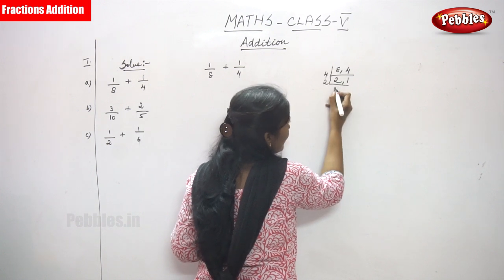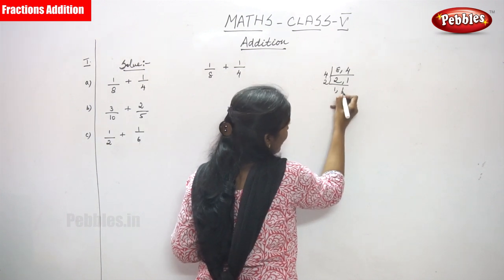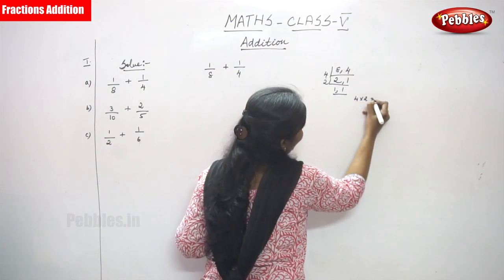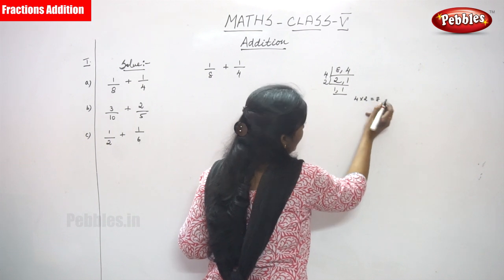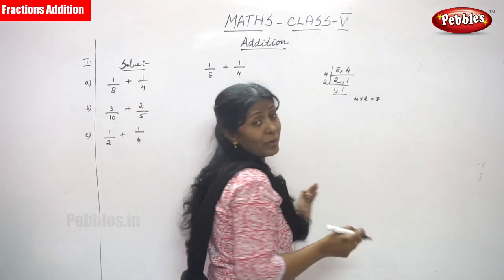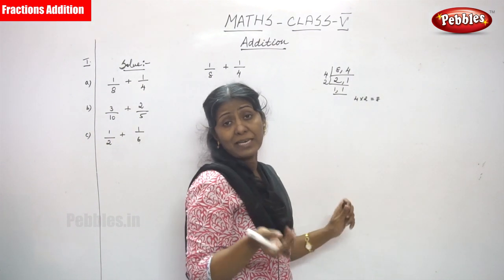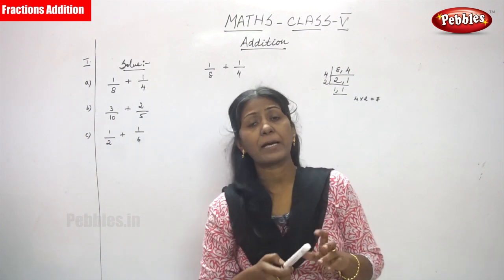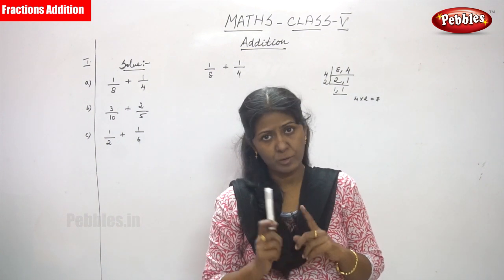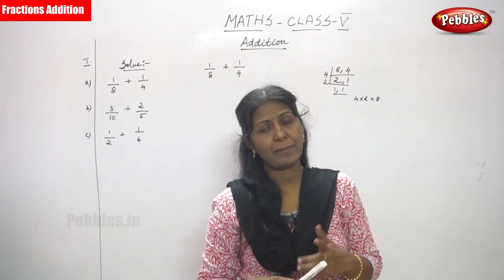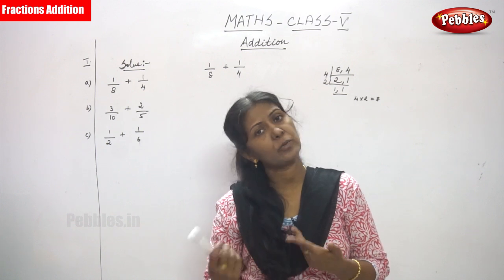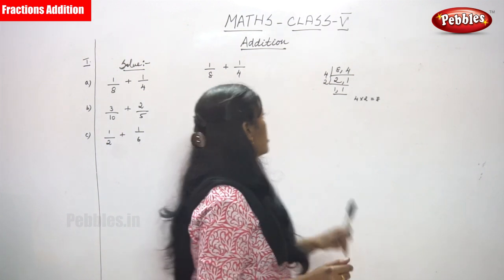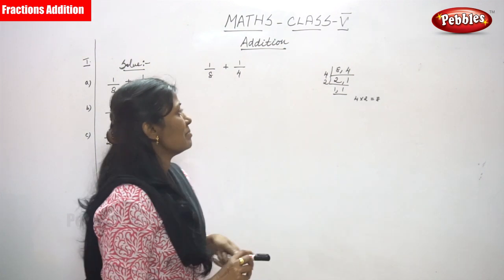2 divided by 2 gives 1 and again 1. So 4 into 2 gives 8. If you multiply by 1, you get the same number — any number multiplied by 1 gives the same number. For example, 10 into 1 gives 10, 5 into 1 gives 5. So LCM is 8.